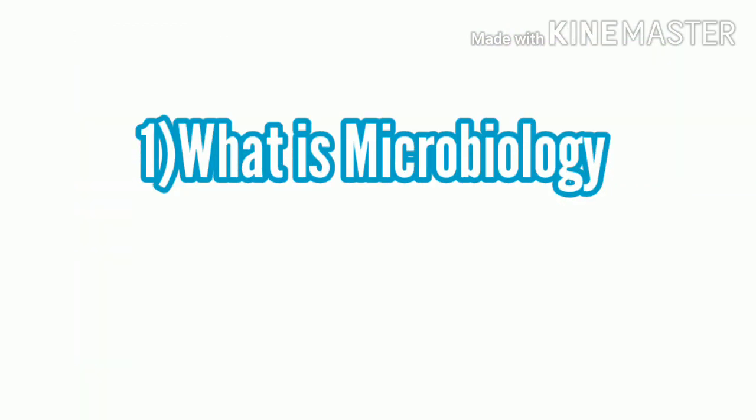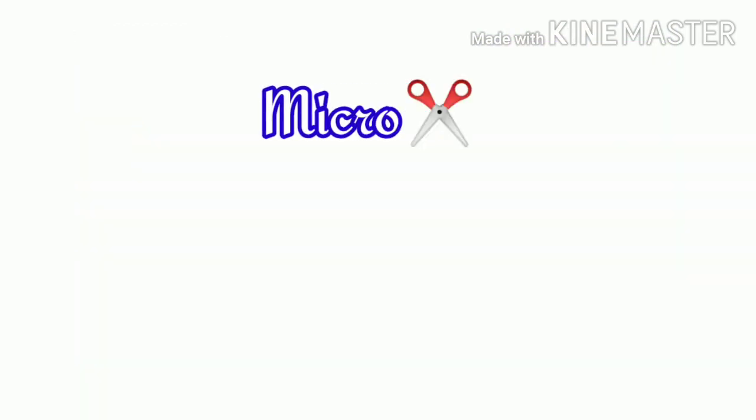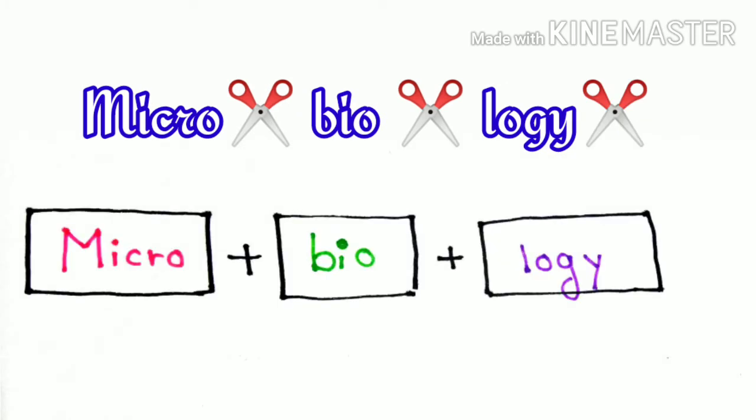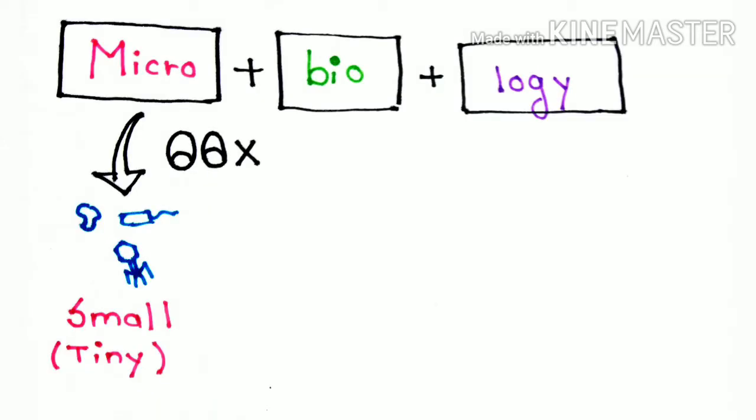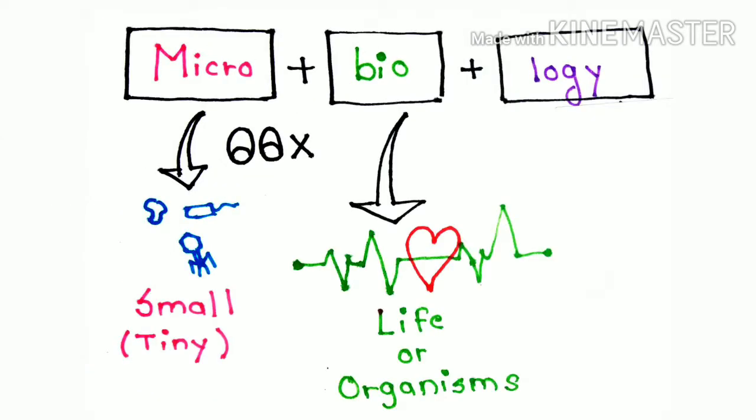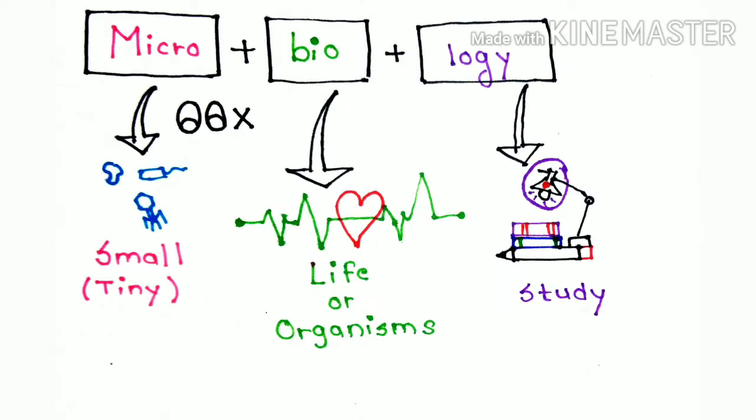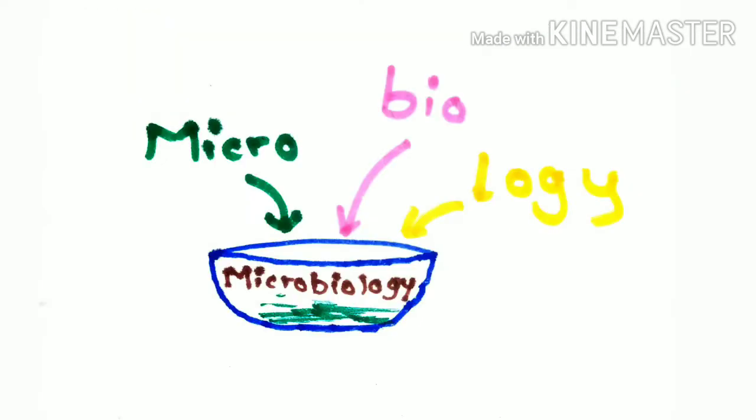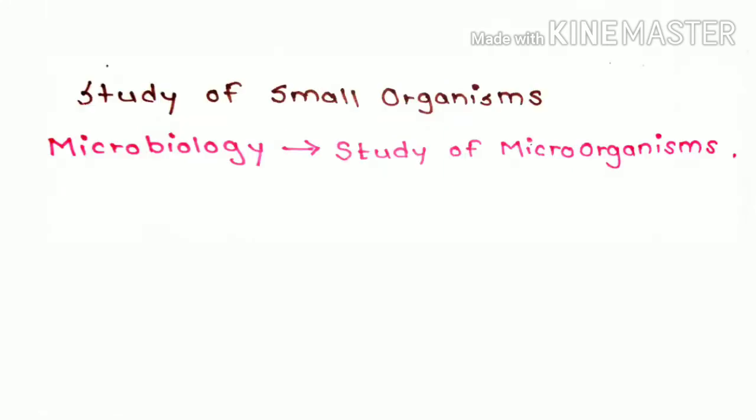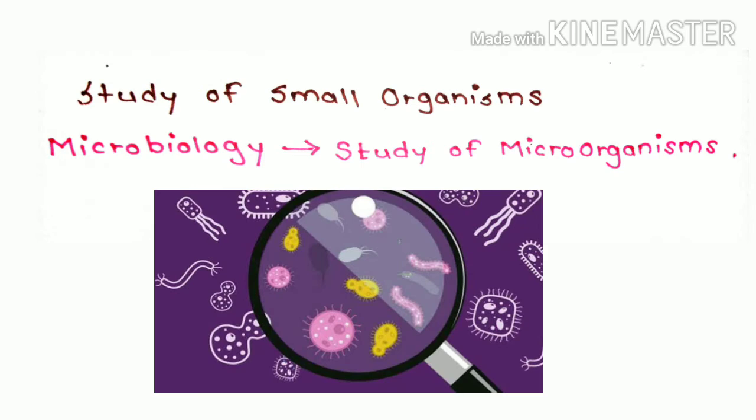First question is what is microbiology? For our understanding, let's split the word microbiology into three different parts. The first is micro, the second is bio and third is logic. Micro meaning small, bio meaning life or organism, and logic meaning study. As we put this part together, we can make sense that microbiology is a study of small organism and we call this small organism as microorganism.